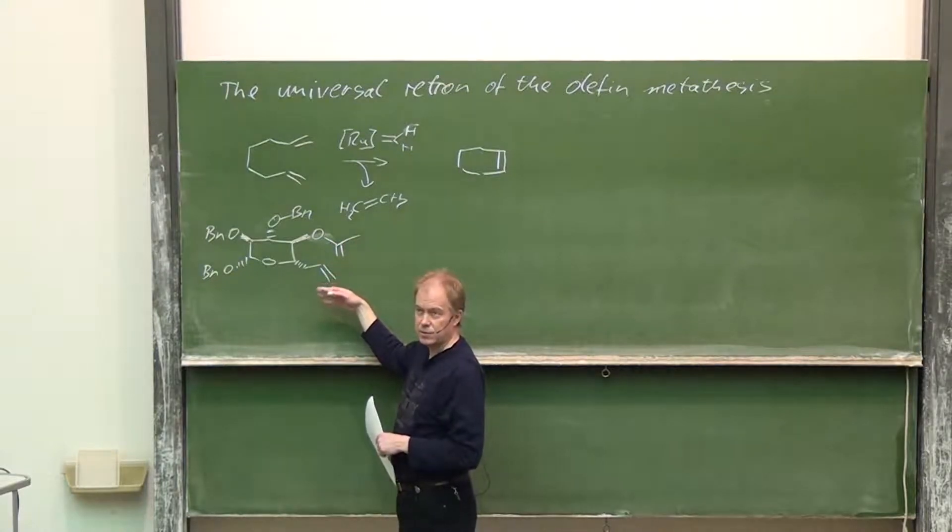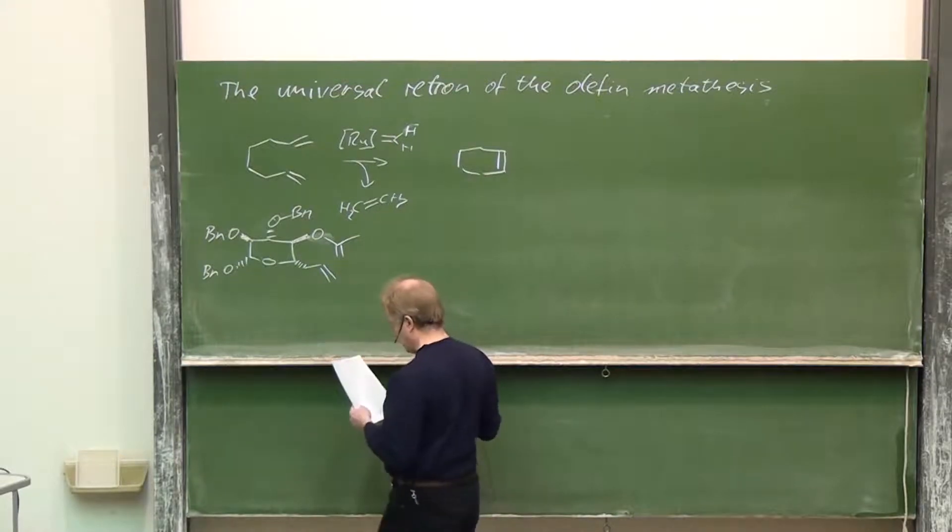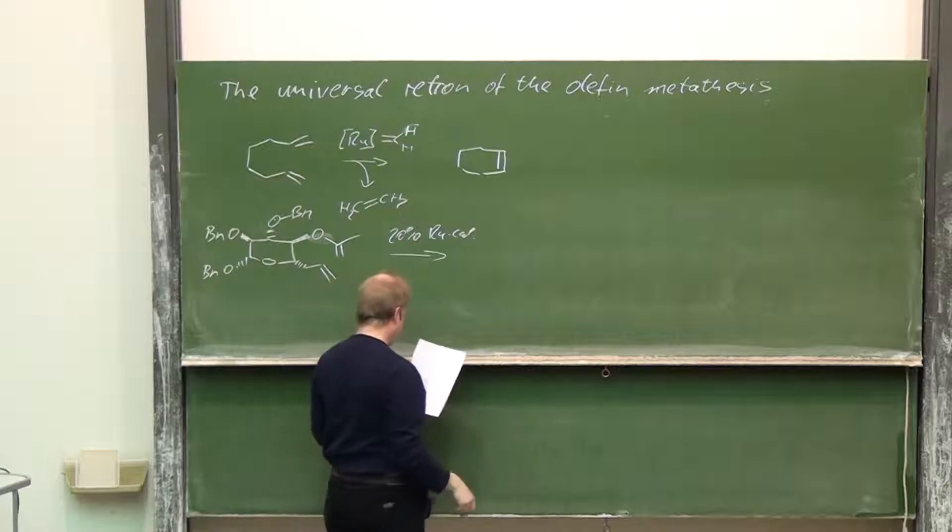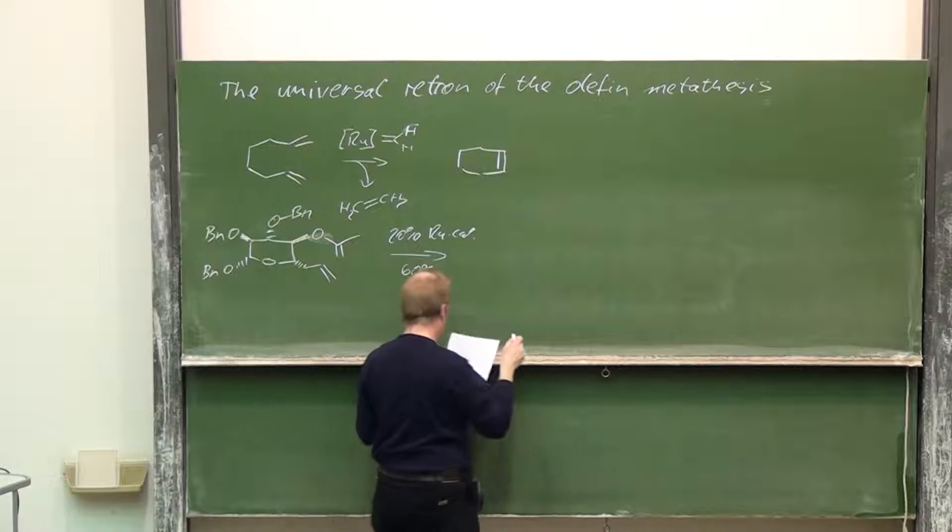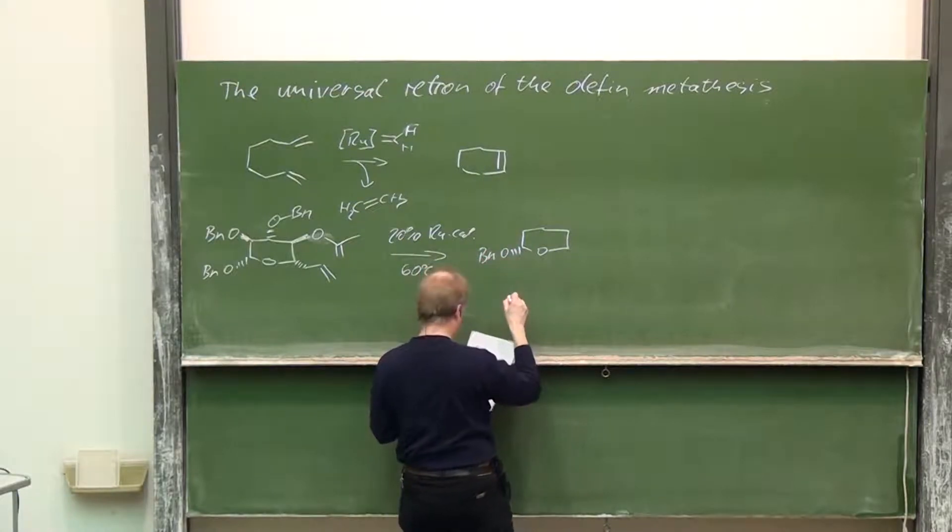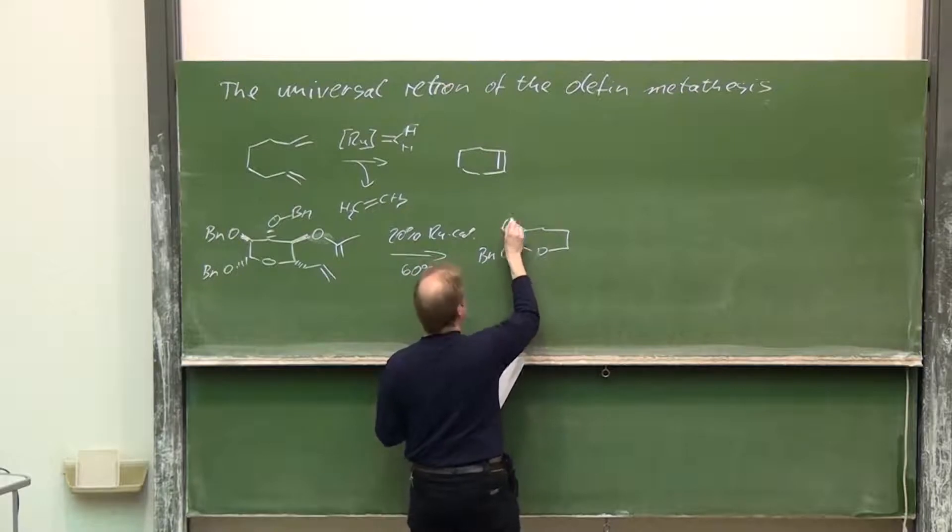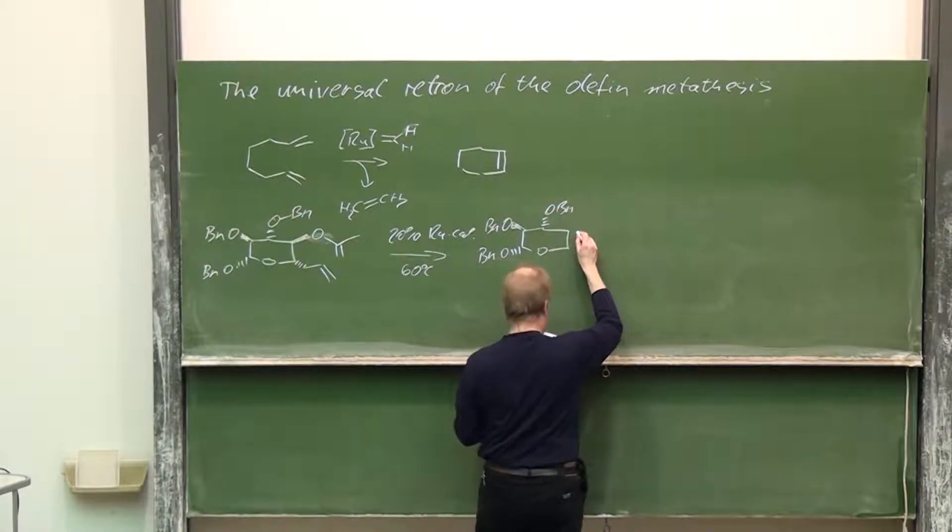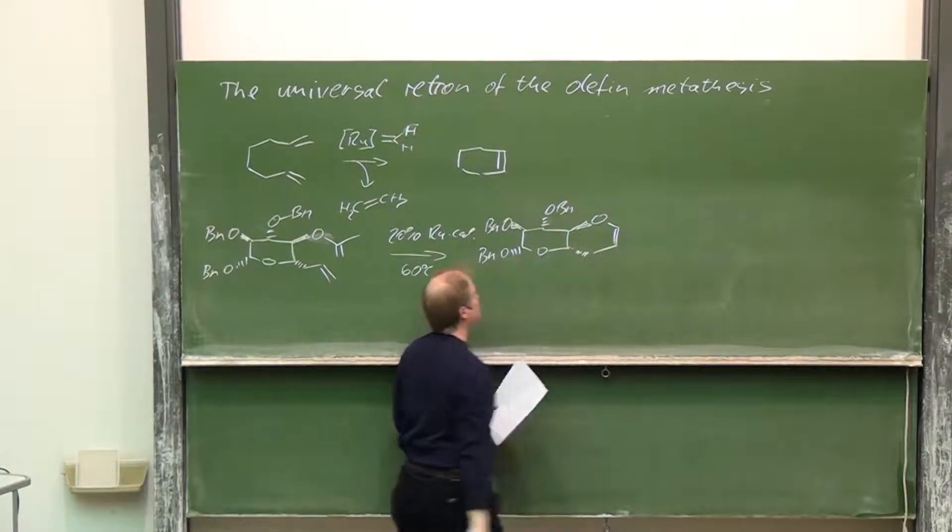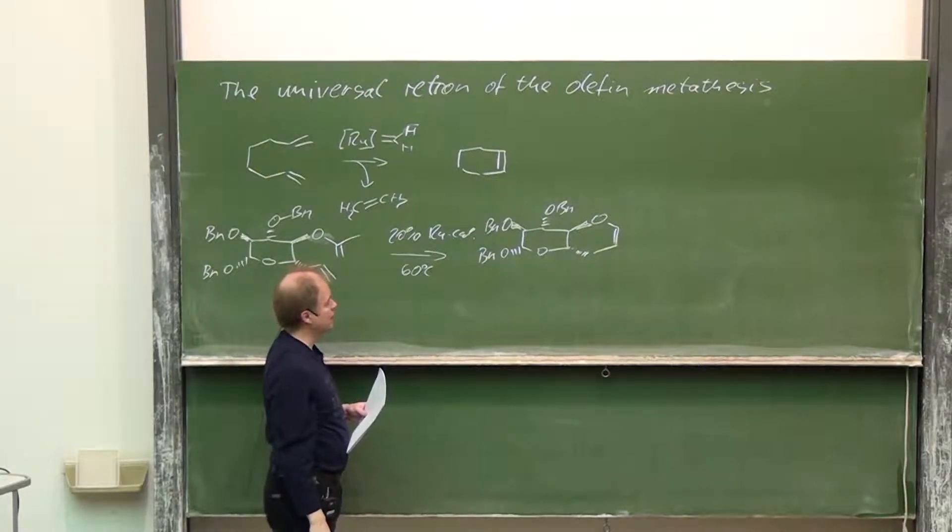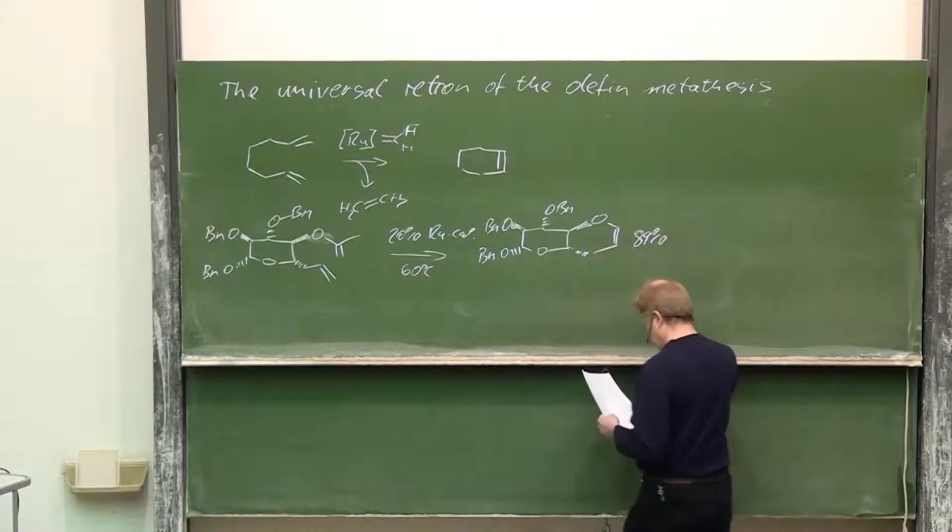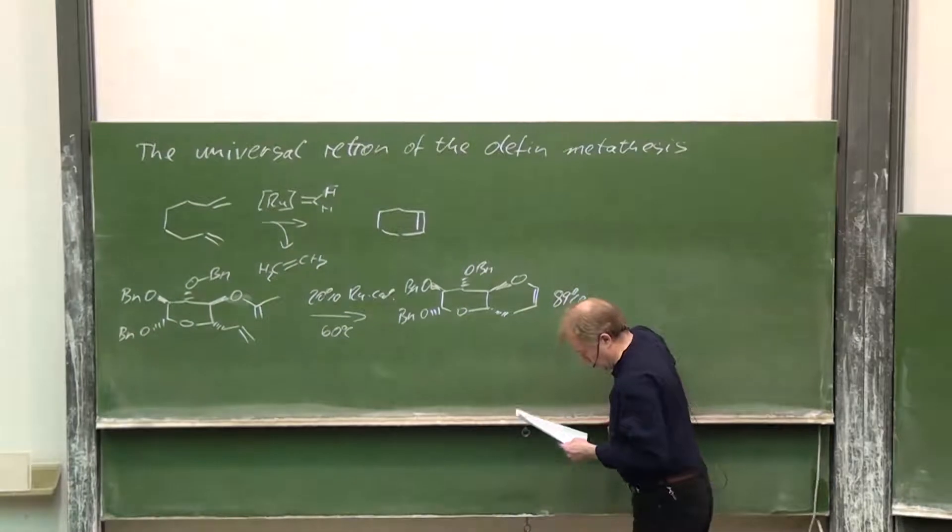Does that perform ring closing metathesis reaction? Well, indeed, 20% of ruthenium catalyst at 60 degrees and the reaction, the ring closing metathesis will take place just nicely, giving rise to these two transfused heterocycles. Yield 89%. And the structure of the catalyst involved: